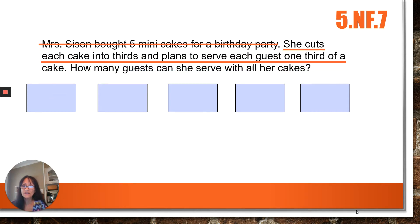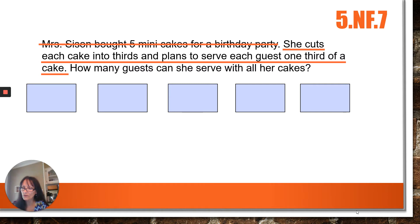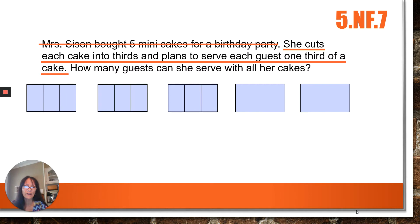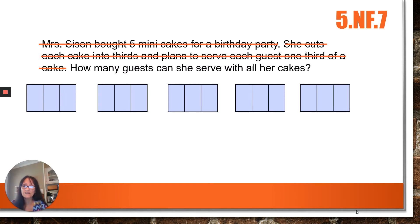Next, she cuts each cake into thirds and plans to serve each guest one third of a cake. What should we do? You're right — cut them up into three equal pieces. So let's do that. Now we have finished with that sentence, so we're lining it out.